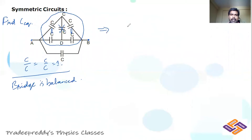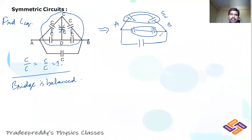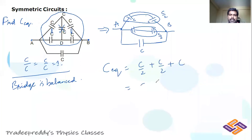As the bridge is balanced, you can eliminate the middle capacitor. The redrawn circuit has capacitor C and C in one branch (series, effective = C/2), and capacitor C and C in another branch (series, effective = C/2), plus one more capacitor C. All three — C/2, C/2, and C — are connected in parallel between A and B. So C_equivalent = C/2 + C/2 + C = 2C.